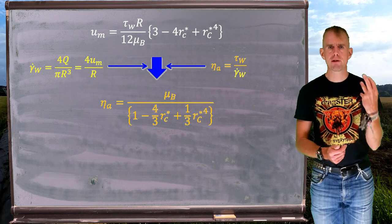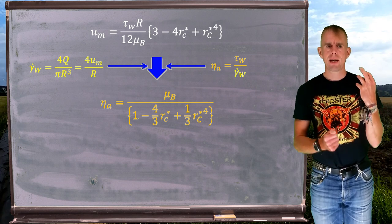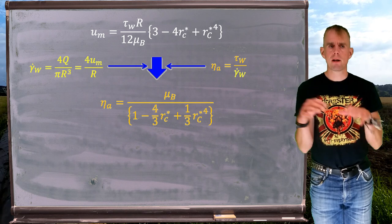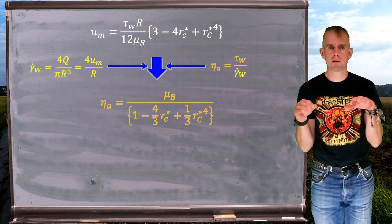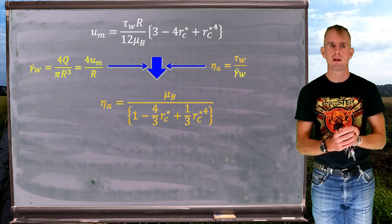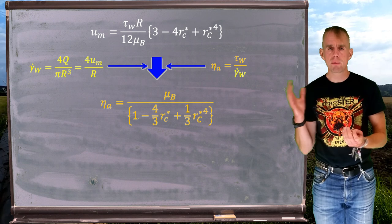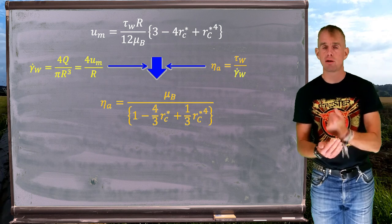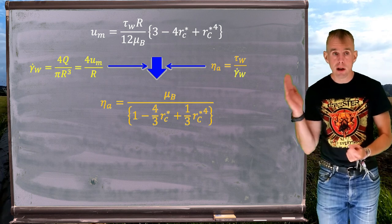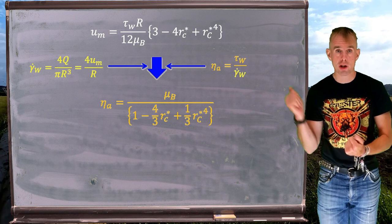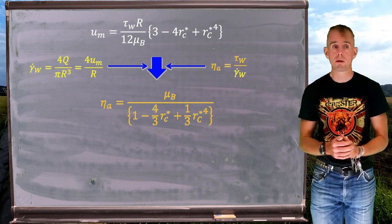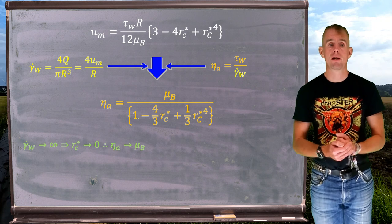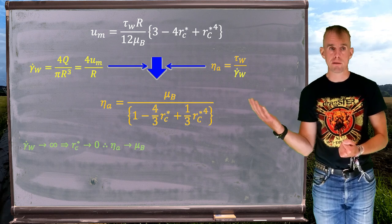My apparent viscosity is the Bingham viscosity μ_B divided by a group of terms that involve my core radius R_C*. What we're going to do is look at when my apparent viscosity approaches a Newtonian and when it doesn't. When R_C* is very small, the apparent viscosity approaches a Newtonian viscosity μ.